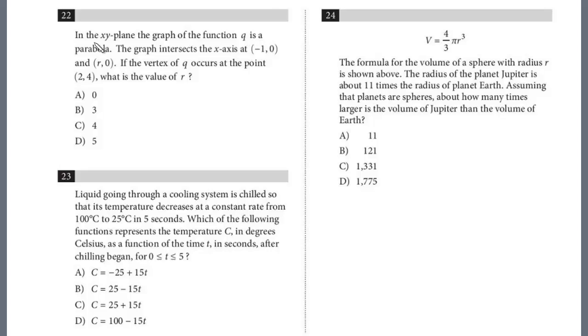In the xy-plane, the graph of the function q is a parabola. The graph intersects the x-axis at negative 1, 0, and r, 0. If the vertex of q occurs at the point 2, 4, what's the value of r? I think it helps for this problem. Let's sketch it out.